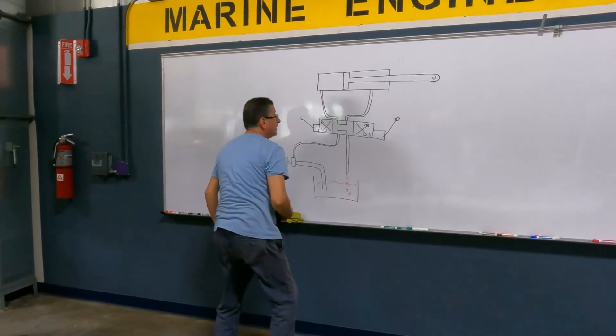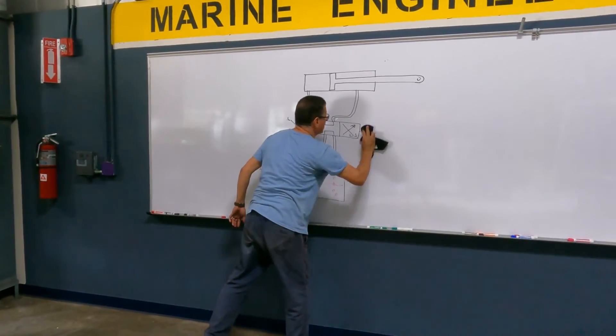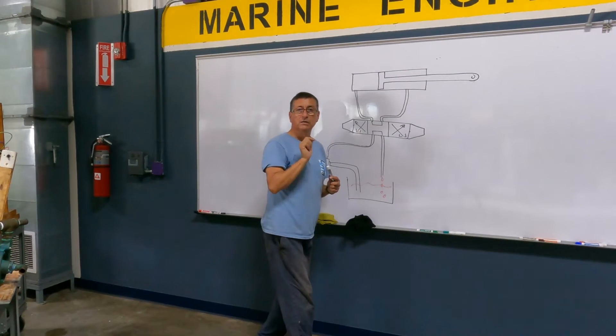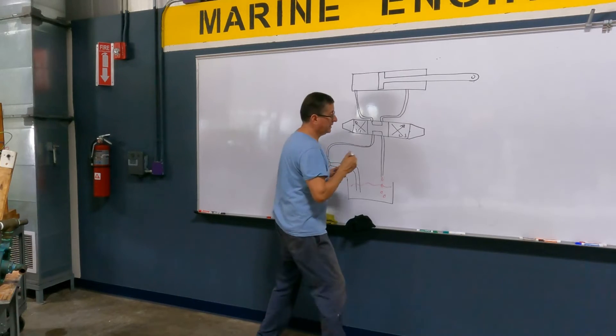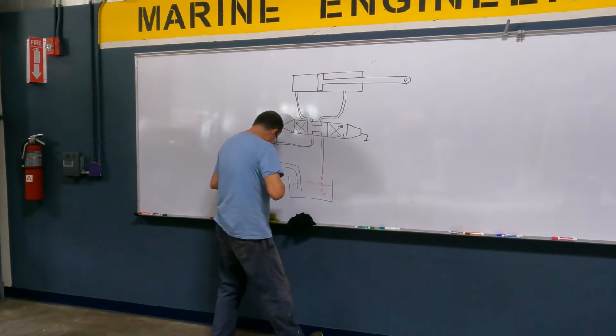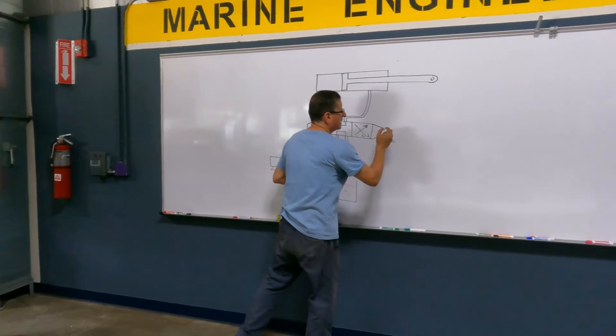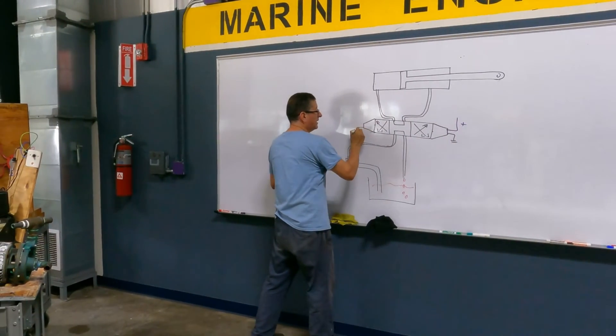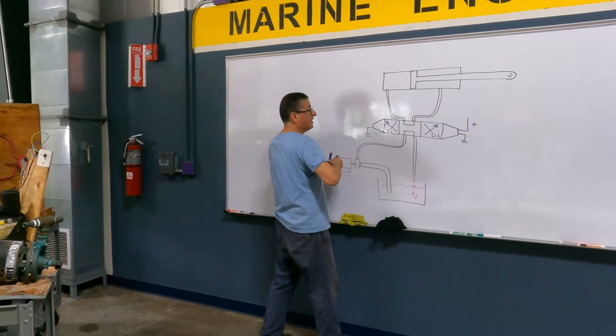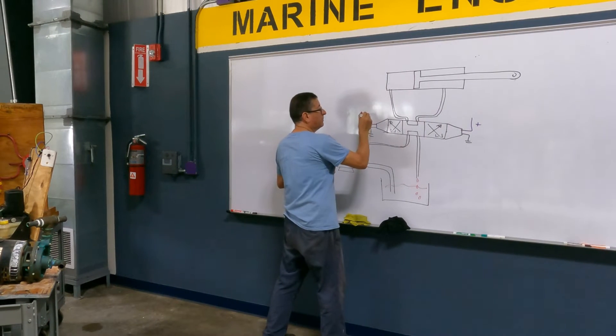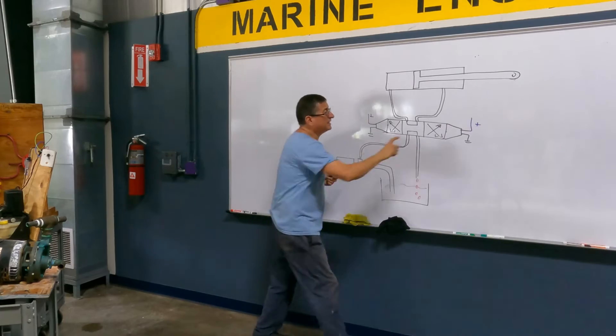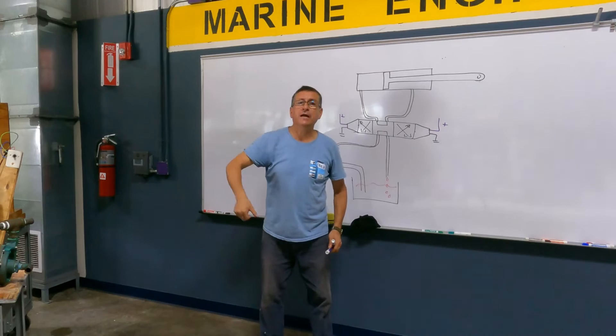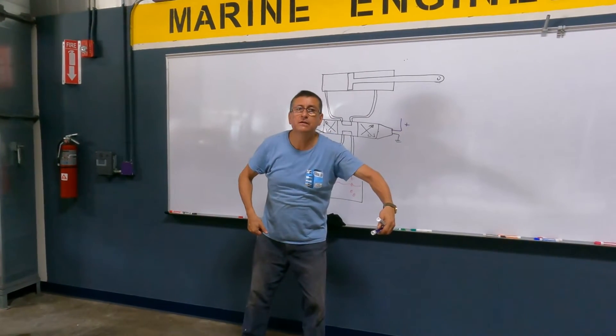Or I can change the selector valve here, the manual with solenoid. And this one is negative and positive, and this one is negative and the other positive. I can install here and here a push button. One push button for up and other push button for down.